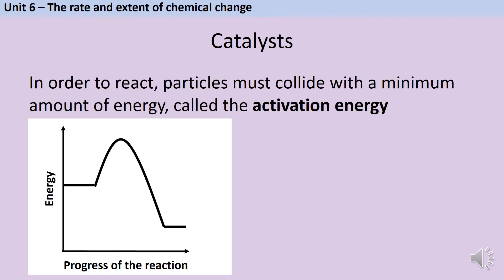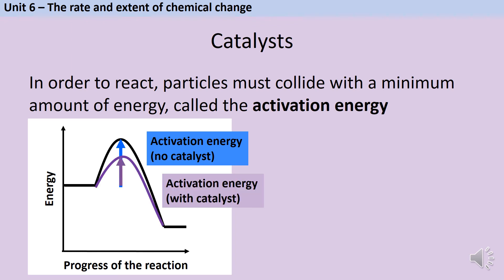At the start of the video, we looked at energy profiles, and we said that the activation energy could be represented by an arrow that went from the height of the reactants up to the transition state. When you use a catalyst, the reactants start with the same amount of energy, and the products finish with the same amount of energy. But the activation energy is smaller. This means that the height of the hump will be lower, and our activation energy arrow is also smaller.